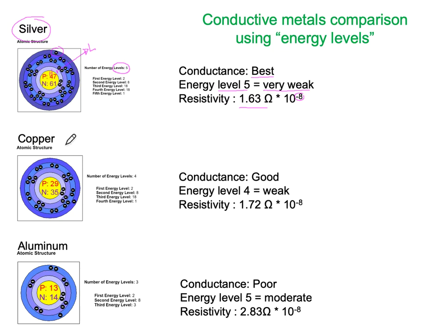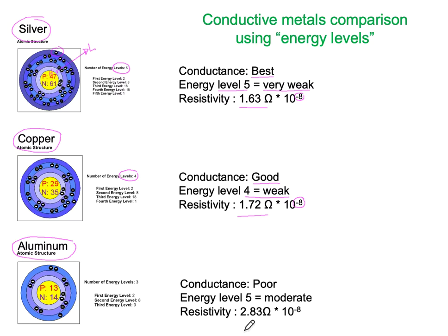Copper is the next best, at number 2, with energy level 4, which is why it is good but not the best. Energy level 4 is still seen as weak, giving us a resistivity of 1.72 × 10⁻⁸ ohm metres. Our next commonly used conductor, mostly in HV applications, is aluminium — a relatively poor conductor compared to the others. Its resistivity is nearly double the other two at 2.83 × 10⁻⁸. Its energy level is 3, making it a moderate conductor — a bit closer to the nucleus, a bit harder to drag electrons from atom to atom.